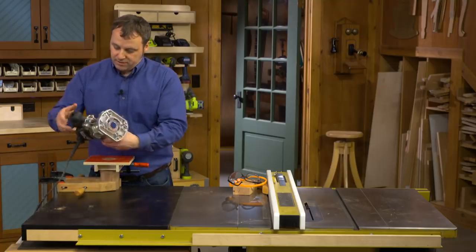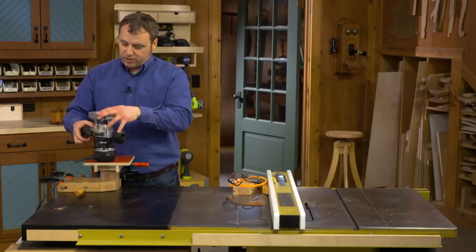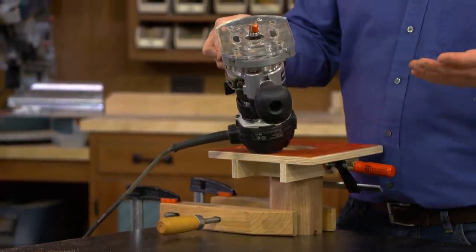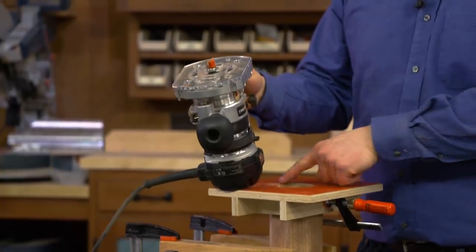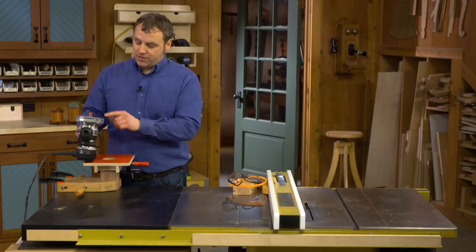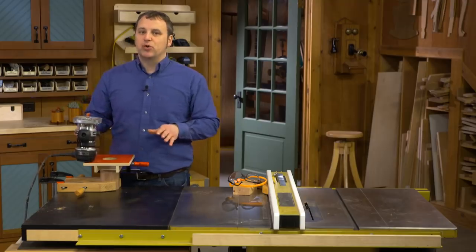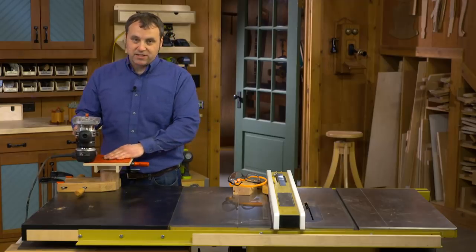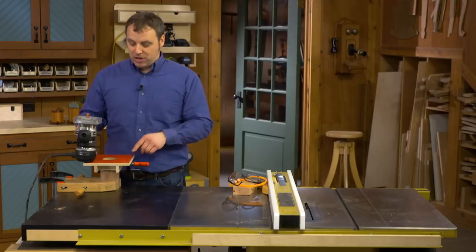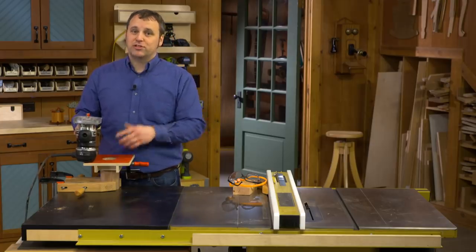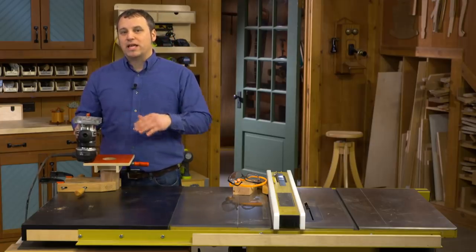For the bit, I'm using a plunge router, but then I'm using a pattern bit that has a bearing on the top edge, and that bearing is going to follow the hole in my pattern. Now the cutting edge on this bit is pretty short, so I'll make two passes using the template, and then I'll pull the template off, and then the bearing can now follow the established circle that I already have while I complete the recess.